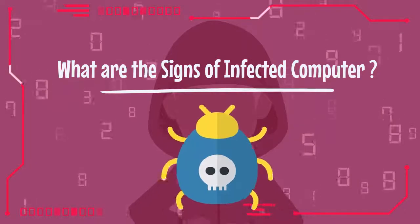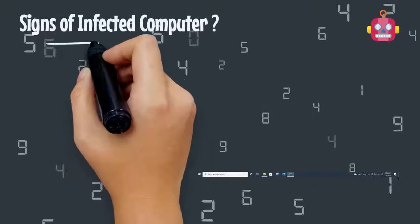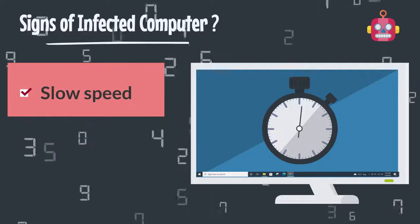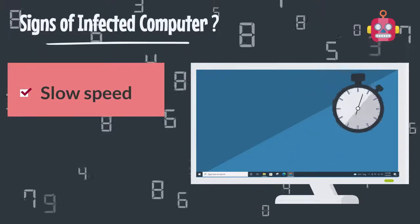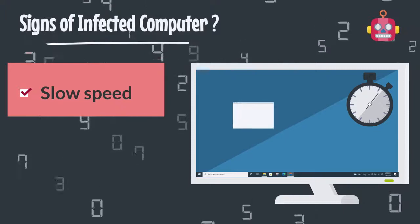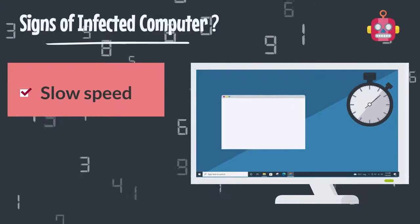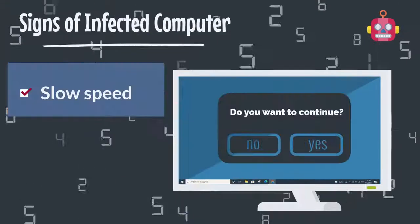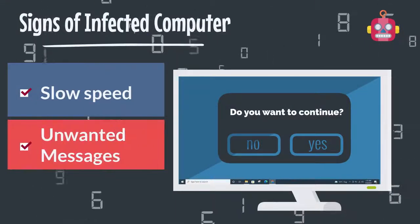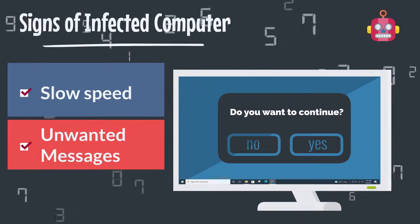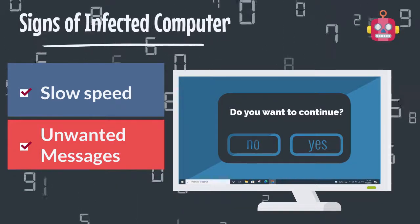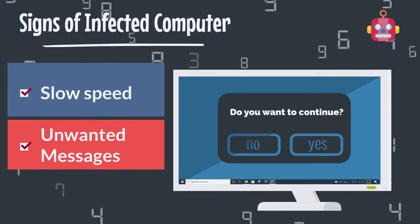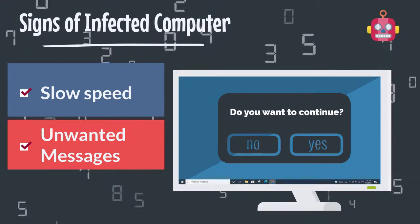What are the signs of an infected computer? Number one: slow speed of the computer is the most common sign of virus infection. If your computer, laptop, or mobile is taking more than normal time to load any program or app, it might be a reason of a computer virus. Number two: unwanted messages. There are types of viruses which display messages on the computer screen to tease users. If one finds such messages frequently on the screen, it might be a sign of virus infection.